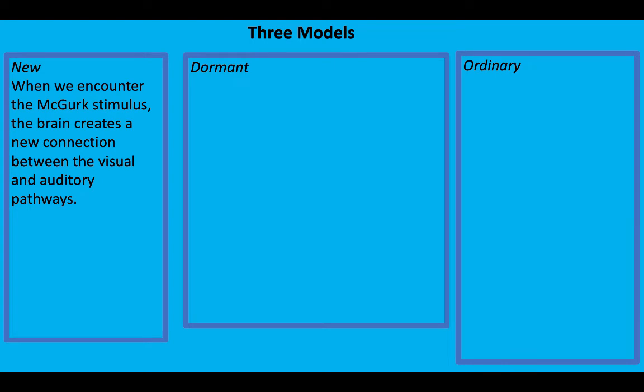New says that when you encounter this stimulus, which we can call a McGurk stimulus, the brain creates a brand new connection between the visual and auditory pathways, and you hear far because that new connection influences what you hear.